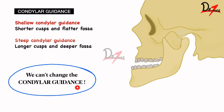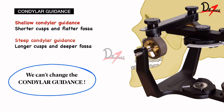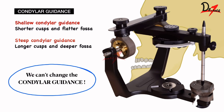How do we set condylar guidance on the articulator? By using the protrusive record. In brief, we take the centric and protrusive records of the patient, place the protrusive record, and adjust the condylar guidance. This gives the H value, and the L value is found by the formula: L = H/8 + 12.